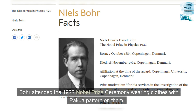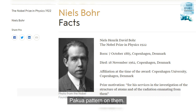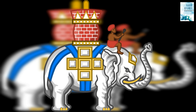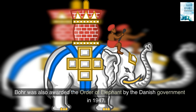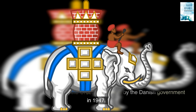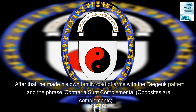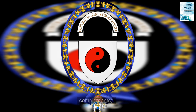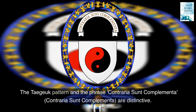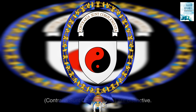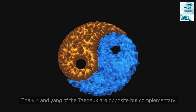Bohr attended the 1922 Nobel Prize ceremony wearing clothes with a pakua pattern on them. Bohr was also awarded the Order of Elephant by the Danish government in 1947. After that, he made his own family coat of arms with the taijitu pattern and the phrase 'Contraria sunt complementa' — meaning opposites are complementary. The yin and yang of the taijitu are opposite but complementary.